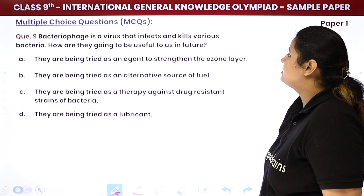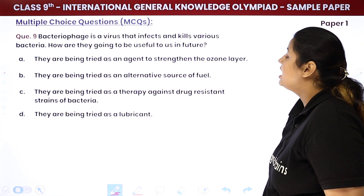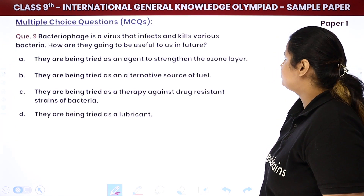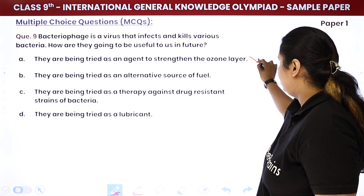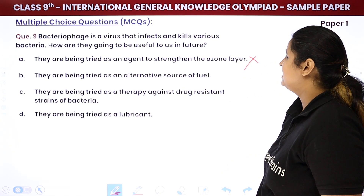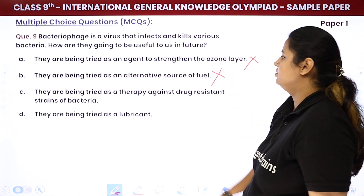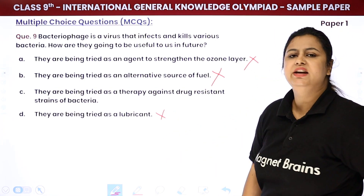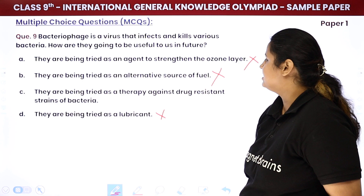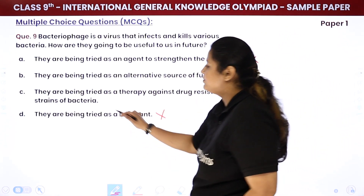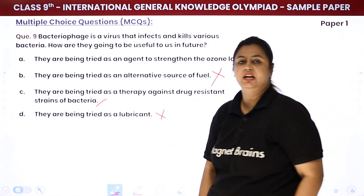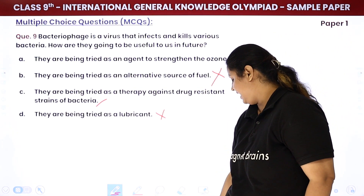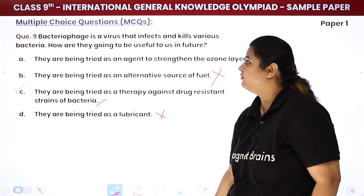Bacteriophage is a virus that infects and kills various bacteria. How will it be useful to us in the future? The options include: strengthening the ozone layer, alternative source of fuel, use as lubricant — none of those make sense. Basically, bacteriophages are being tried as a therapy against drug-resistant strains of bacteria, working as an antidote. Vaccinations or antidotes can be used in this way. That is why bacteriophage is the answer.